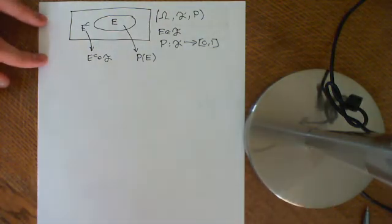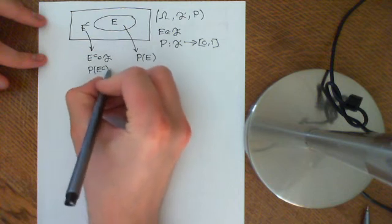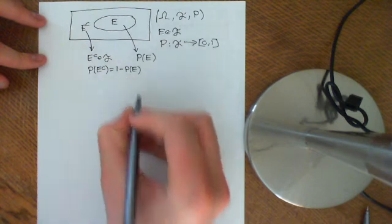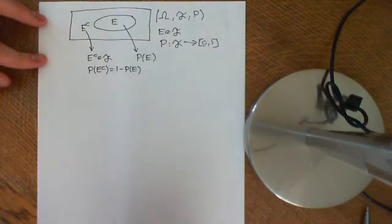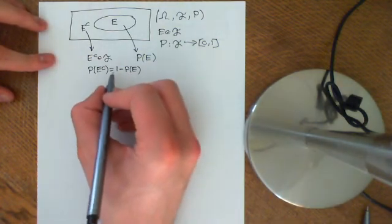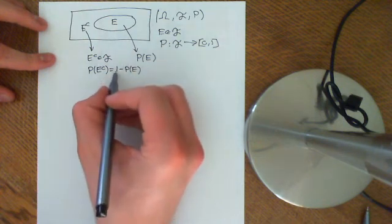So intuitively it makes sense that that should be an event, and we know that the probability of e complement is equal to 1 minus the probability of e, and that just follows from axiom 2 of probability spaces, because e and e complement are disjoint sets.